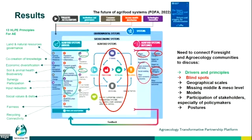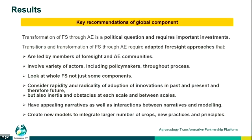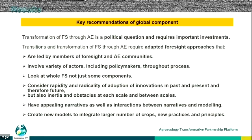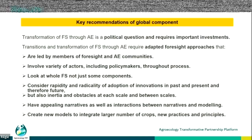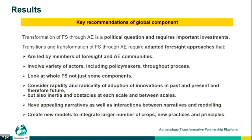Stakeholder participation is important for foresight, but very often policymakers are not included in the whole process — yet it is policymakers who make these decisions. If they're not included in the foresight process, they cannot appropriate the discussions. The main recommendations are that the transformation of a food system toward agroecology is a political question requiring important investments. The question of why the Green Revolution succeeded while agroecology hasn't scaled similarly was raised: one key reason is that the Green Revolution received massive investments and moved very quickly.